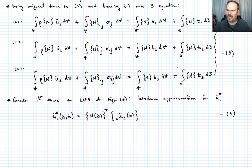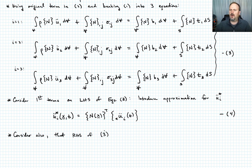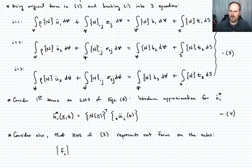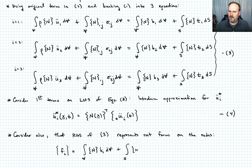Consider also the right-hand side of equations 3. Those are the net forces on the nodes. So the right-hand side of equation 3 represents the net forces on the nodes. We can write that f_i (for directions 1, 2, and 3) equals the integral over the volume of N times b_i dV plus the integral over the surface of N times t_i dS. Call that equation 5.